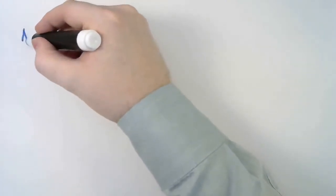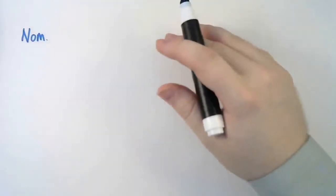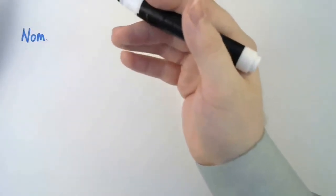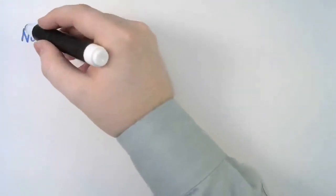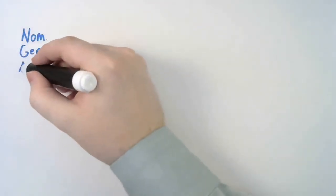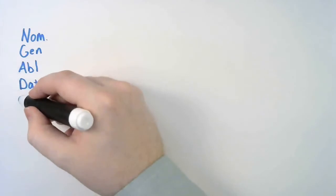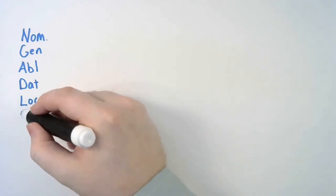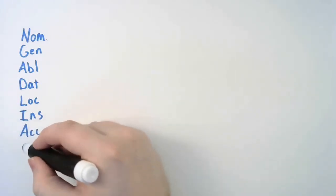What are our cases? We have the nominative. I am abbreviating. I like to abbreviate my cases with a three-letter abbreviation, or if I'm in a real hurry, a one-letter abbreviation. But I'm just going to abbreviate for time's sake here. The nominative, and then what's next? Next, we have the genitive case, followed by the ablative case, the dative comes next, then the locative, and the instrumental, the accusative, and the vocative case.